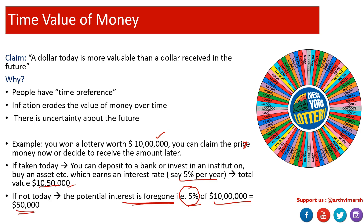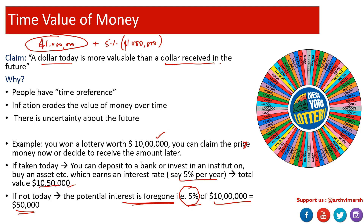Now let's understand the intuition behind the claim. A dollar today — the value was one million — is far more valuable than the dollar received in the future, because this one million could have additionally earned five percent, ending up as one million fifty thousand dollars. By deferring the claim for one year, you end up with only one million. This happens because as an individual you have a time preference.